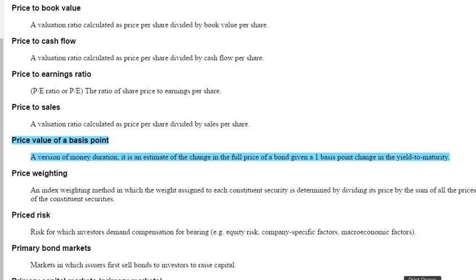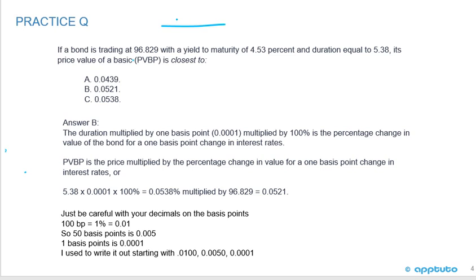Before the solution, the glossary defines PVBP as a version of money duration — an estimate of the change in the full price of a bond given a one basis point change in the yield to maturity. This question is a little bit tricky because it's a two-step question. C is the answer to the first step, and B is the correct answer to the full question.